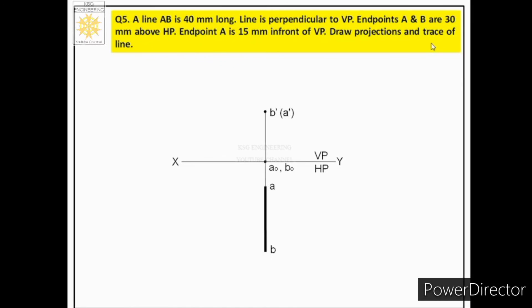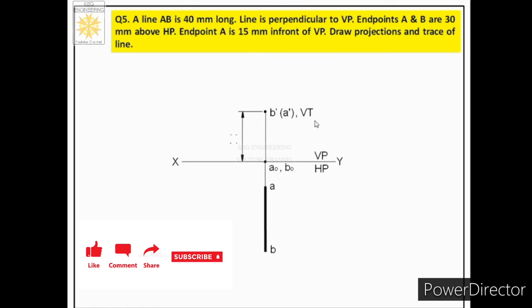Now for the trace: since the line is perpendicular to VP, extending it will intersect VP, giving the vertical trace. As seen in the pictorial view, the extension intersects the line's front view, so the front view itself is the vertical trace and must be labeled accordingly. After that we place all dimensions — 30 mm, 15 mm, and the true length — using chain dimensioning.